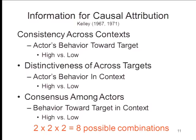Notice that varying one variable while holding all others constant is the essence of the experimental method. Kelley argued that in ordinary everyday living we do something very much like this — we try to see what variability occurs when all other factors are held constant. With three types of information and two levels each, there are eight possible combinations you can extract from multiple observations of behavior.